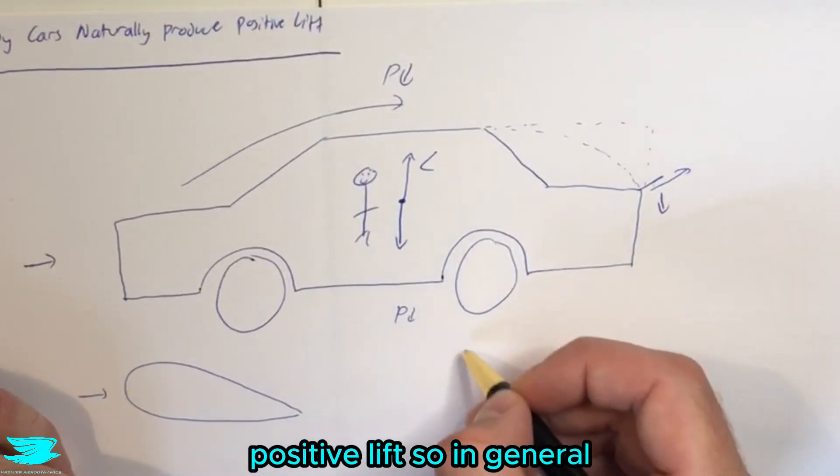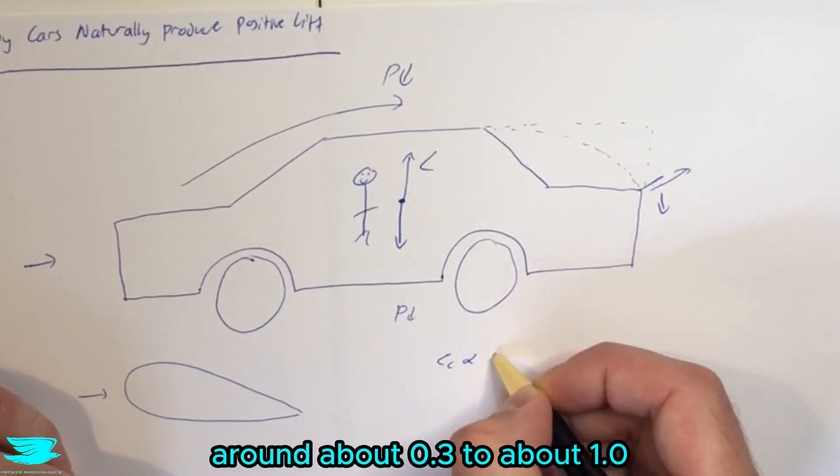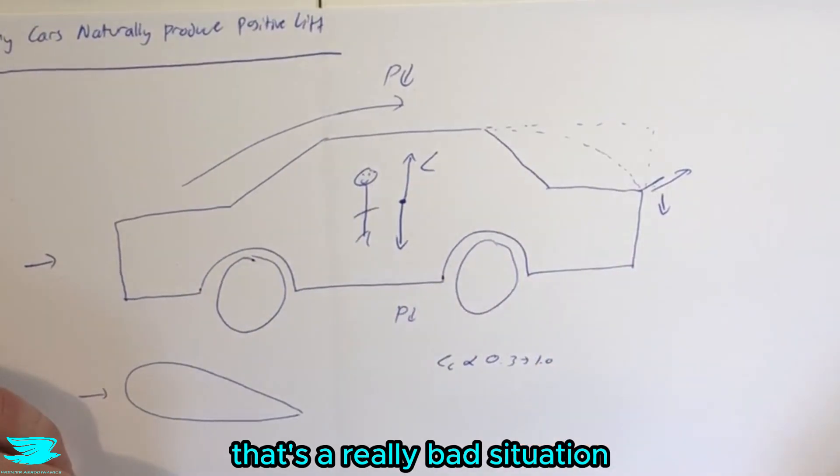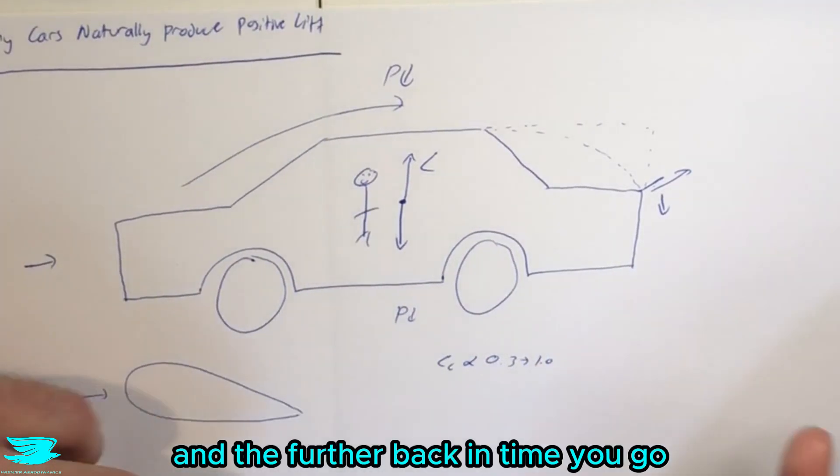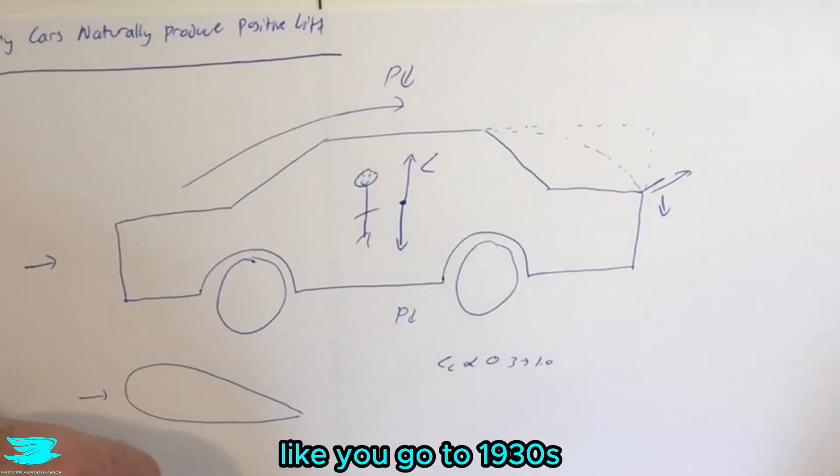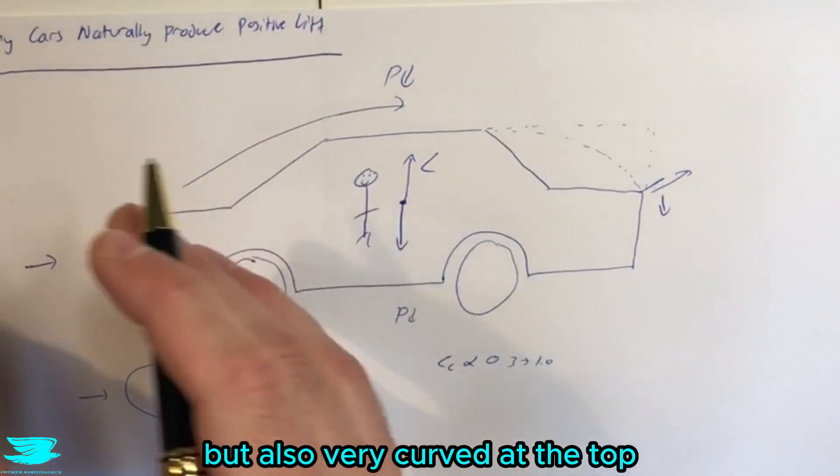So in general, the average car will have a lift coefficient around about 0.3 to about 1.0. That's a really bad situation. And the further back in time you go, the more you tend towards quite high lift coefficients. Like you go to 1930s, 40s, 50s, where the cars were very elegant, but also very curved at the top,